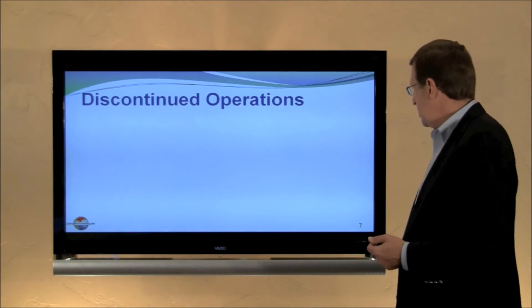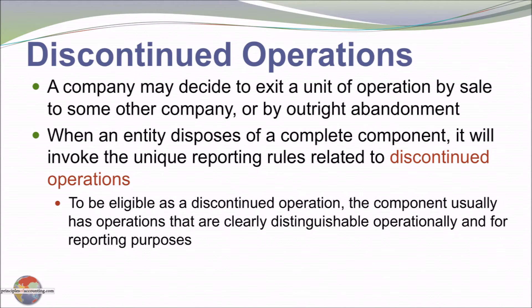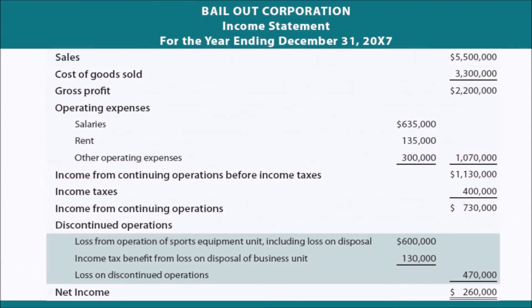Let's move on to discontinued operations. A company may decide to exit a unit of operation by sale or disposal. Disposals of a complete business component have unique reporting rules — a business component has operations that are clearly distinguishable operationally and for reporting purposes. On this income statement, Bailout Corporation completely disposed of a business component during the year. After income from continuing operations, I show the loss from operation of the sports equipment business and a loss on disposal, arriving at a loss from discontinued operations net of taxes of $470,000. Once an operation is classified as discontinued, none of its sales, cost of sales, or expenses appear in continuing operations — everything is pulled down into discontinued operations.